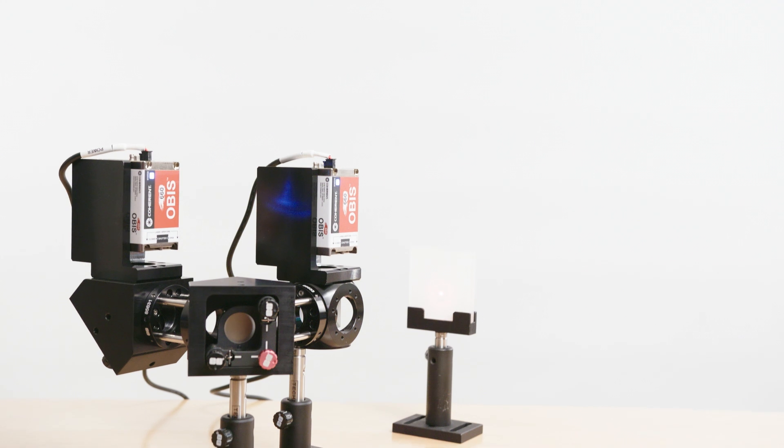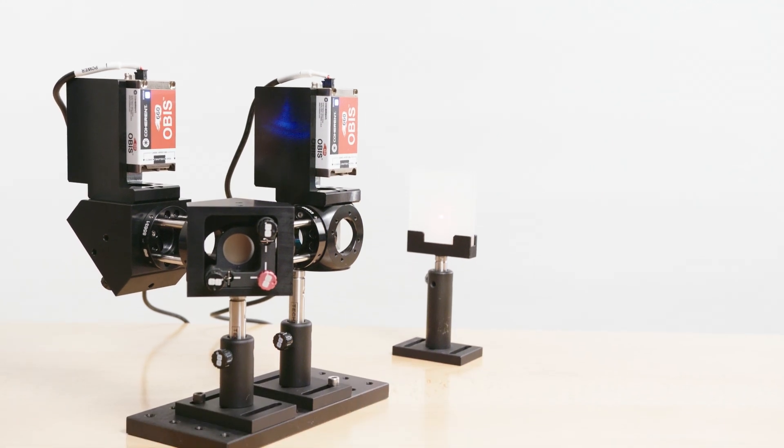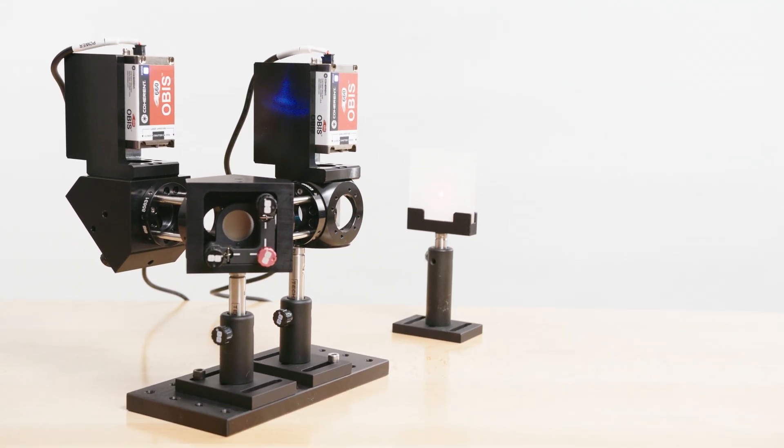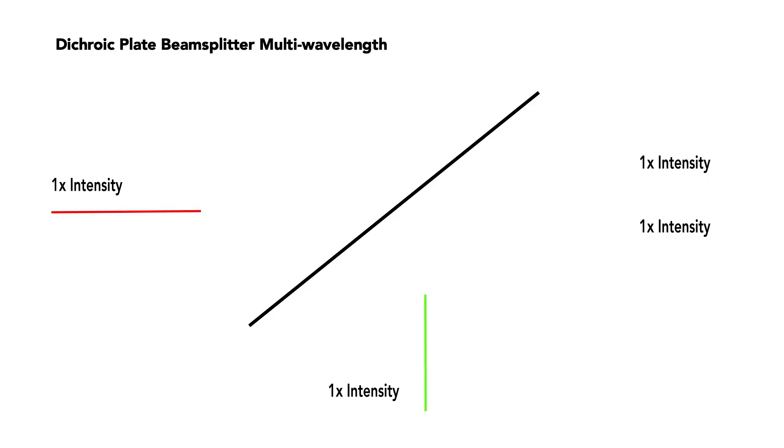Utilizing Edmund Optics components and a highly polarized laser, like the coherent OBIS, this combining technique is fast and easy. When combining laser beams together into a collinear path, dichroic filters, also known as dichroic beam splitters or dichroic mirrors, are typically used.